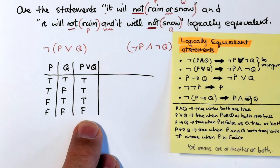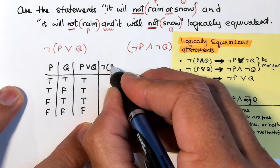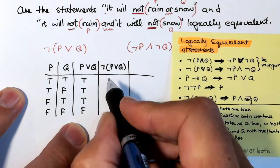Now not P or Q, the negation of that will just be the opposite of what's over here. So it will be false, false, false and true.